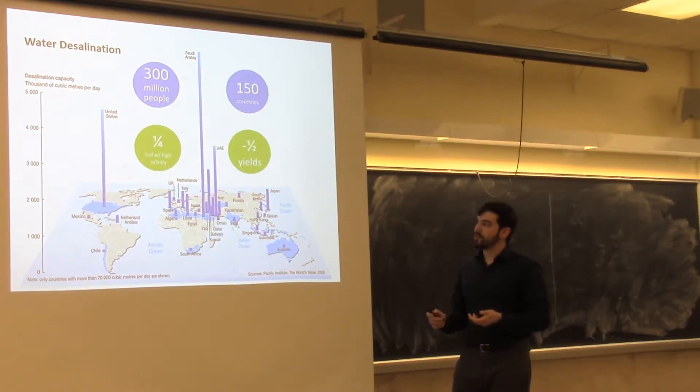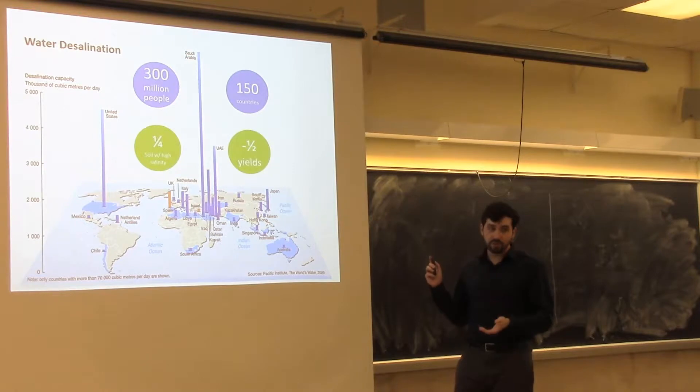And this high salinity can reduce agricultural yields by up to half. Countries like Spain and Israel actually get a very significant portion of their water, including agricultural water, running through these reverse osmosis type membranes.